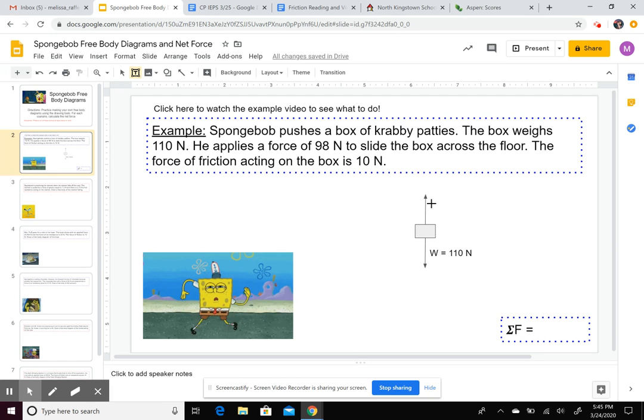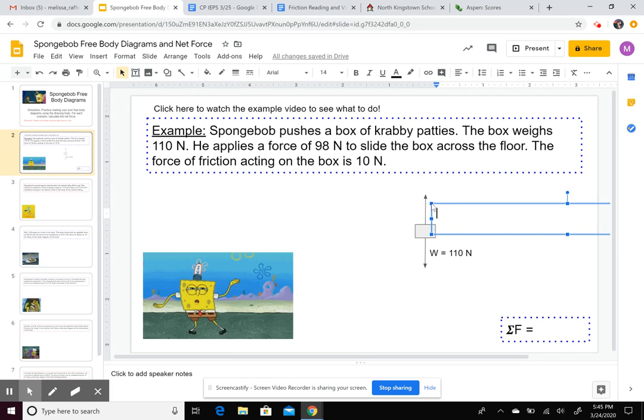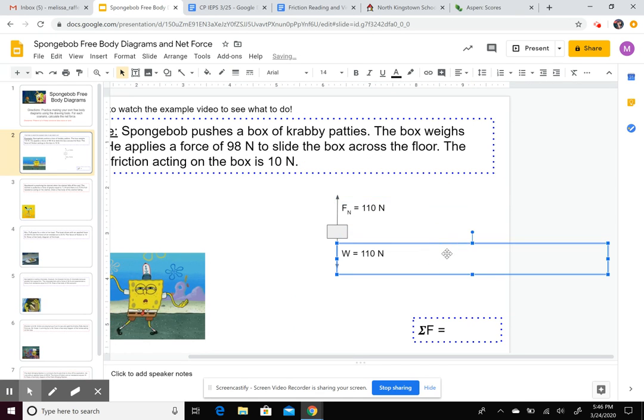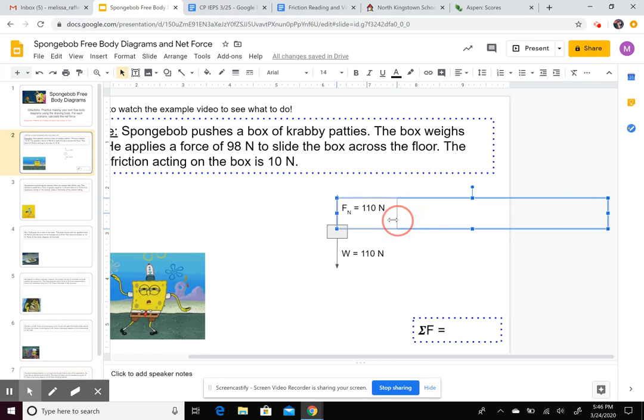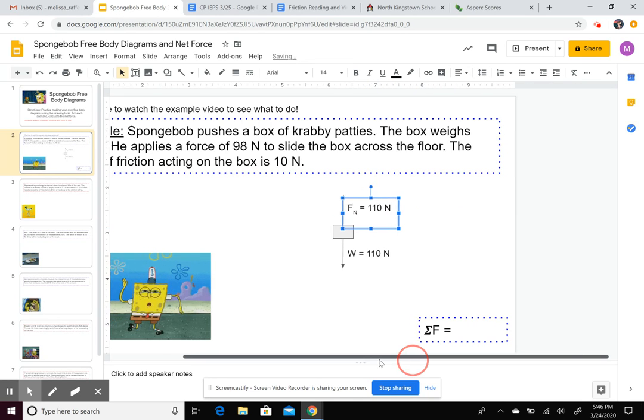And then we're going to label it. So grab a text box. And the symbol for normal force is F. Sometimes it's just N by itself, but I usually use capital F. And then to make a subscript, you hit control comma, capital N, control comma again, put it back to normal. And we know that that force is also 110 Newtons. It's balancing out weight. You can adjust the sizes of these text boxes here so it doesn't pull you off the screen.